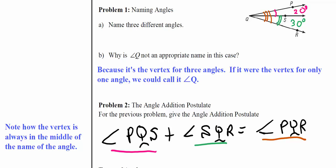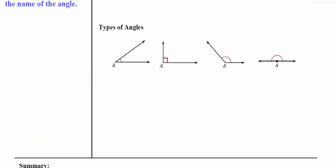To give you an idea, let's put some numbers here. If angle PQS is 20 degrees and angle SQR is 30 degrees, if I add these two up, I get the total angle, which is 50 degrees. That would be the measurement of angle PQR.